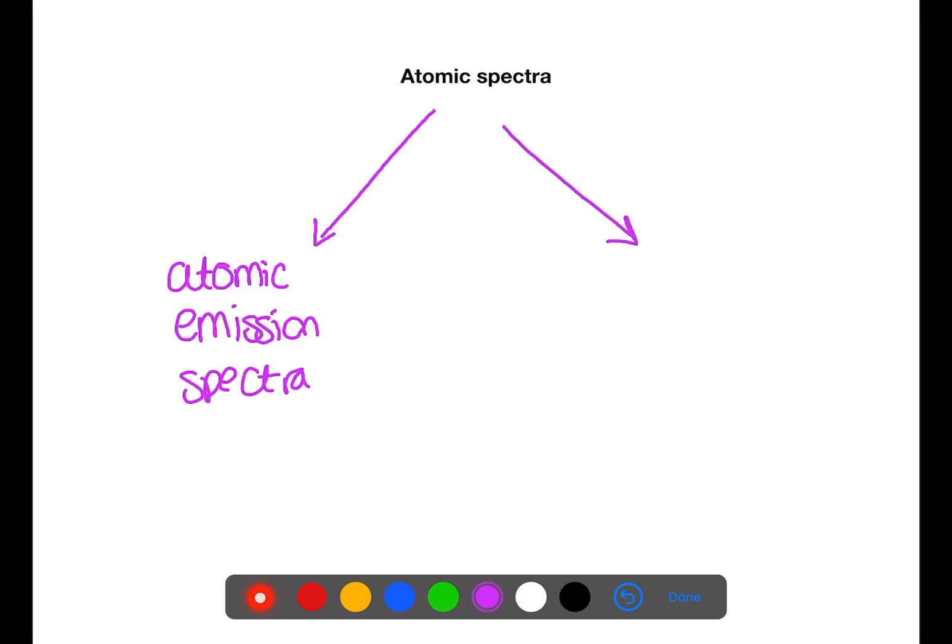Today's video is going to look at the two different types of atomic spectra, atomic emission spectra and atomic absorption spectra. In this video we will look at how these spectra are obtained.